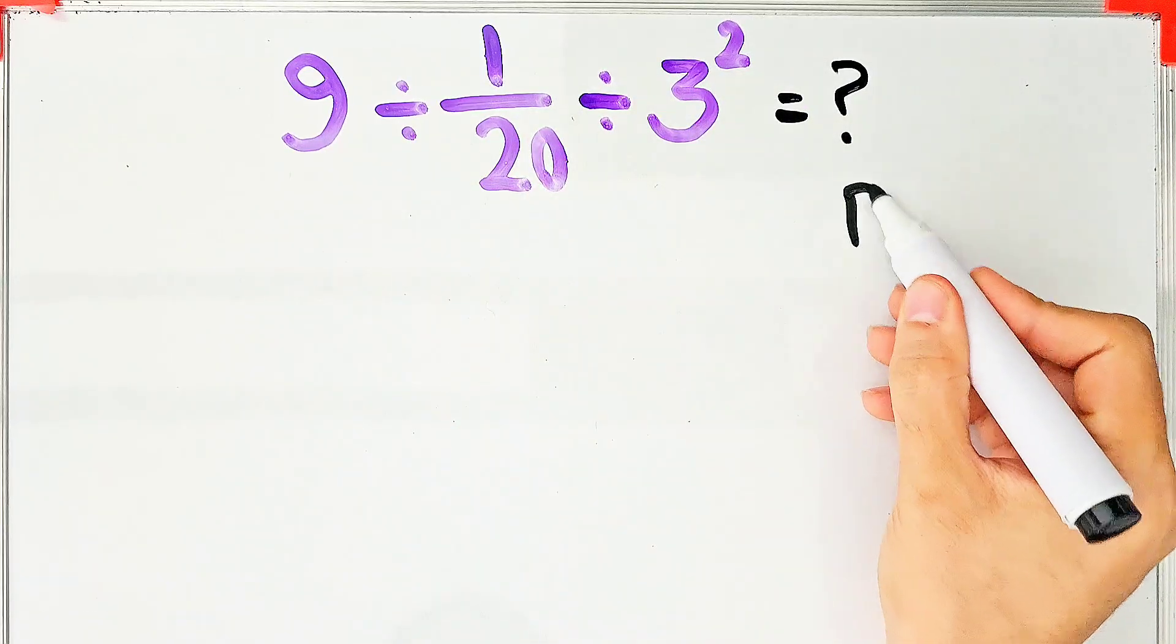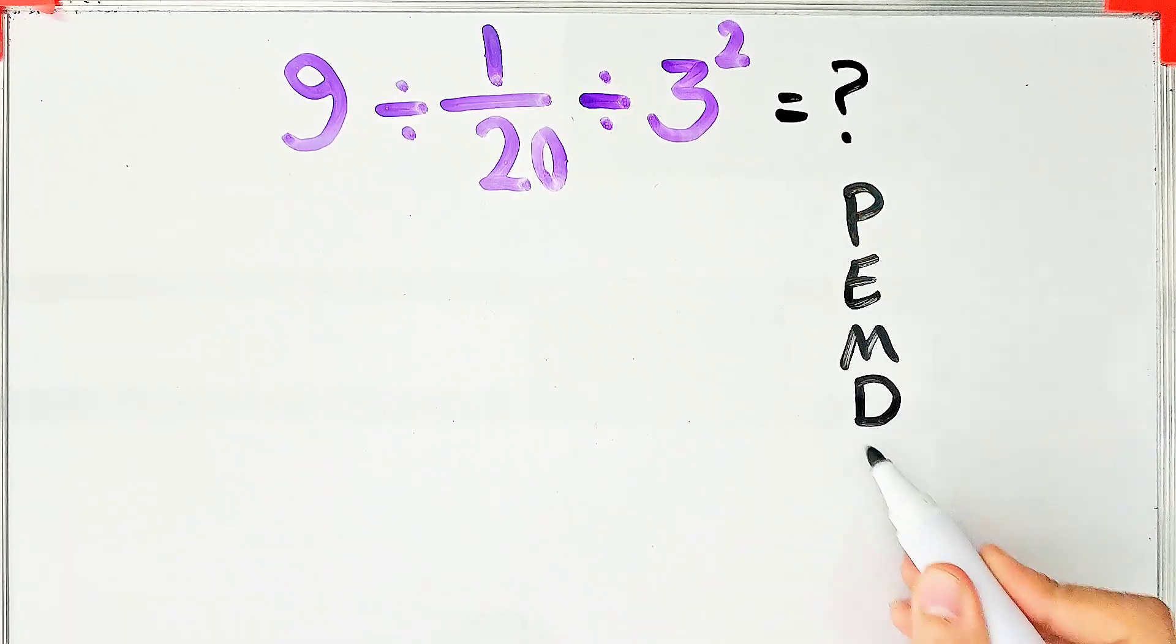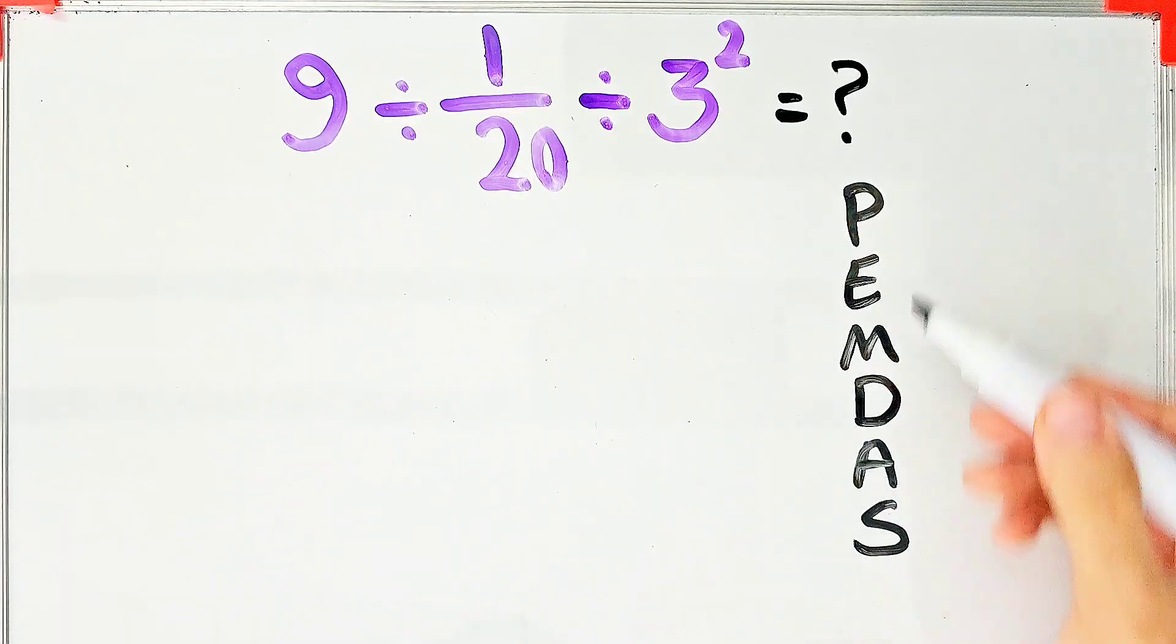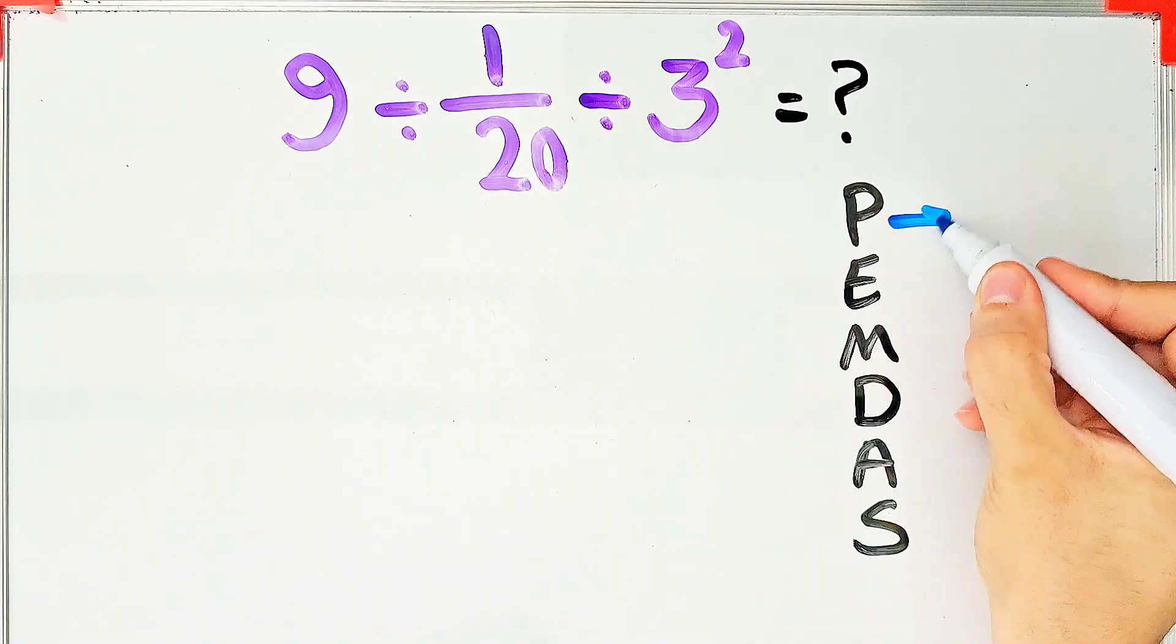To solve this question, we need to follow the order of operations which is PEMDAS. PEMDAS shows the priority of the mathematical operations. If you don't pay attention to this rule, you get the wrong answer.